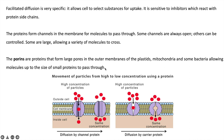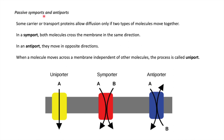There are terms like passive symports and antiports. Some carrier or transport proteins allow diffusion only if two types of molecules move together. In a symport, both molecules cross the membrane in the same direction — substance A requires substance B and substance B requires substance A for movement; if either is absent, the other will not move. In an antiport, if substance B moves out, substance A moves in; if substance B is absent, substance A will not move in.